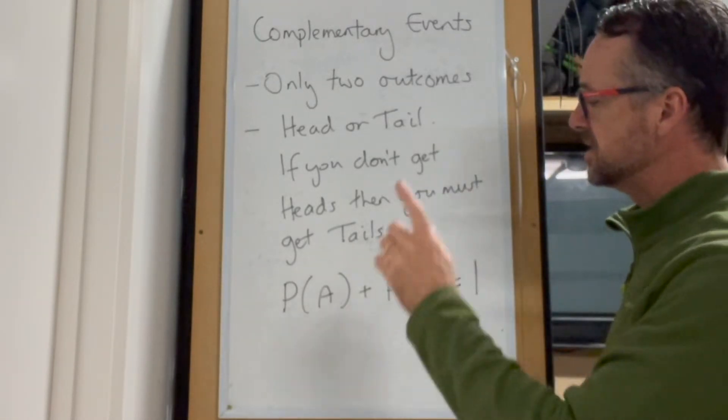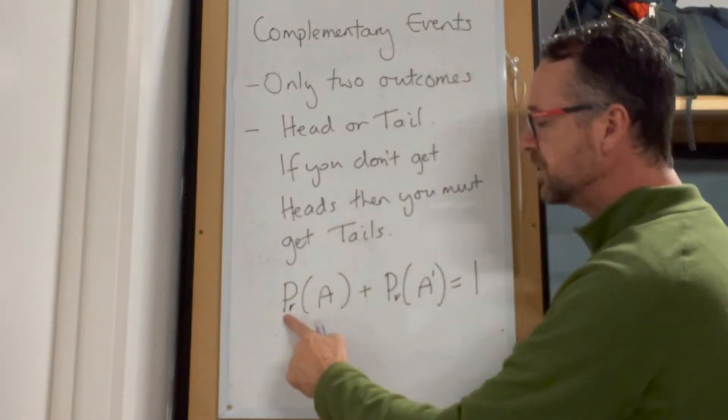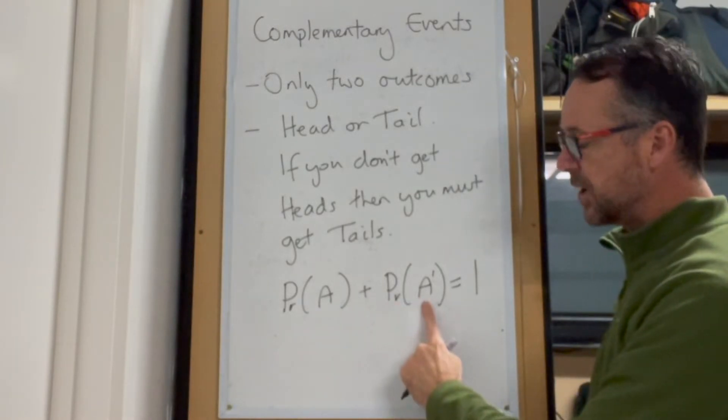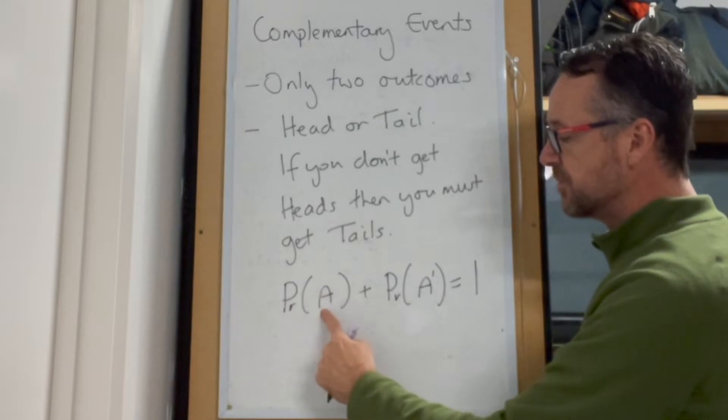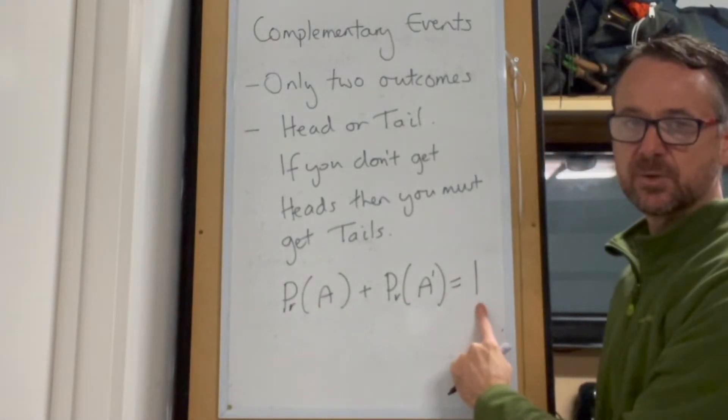What we represent this by is the probability—I should have a P there—and the probability of A is of the event that you're after, and then the opposing part of that is A with a little dash on it. And what we know is that the probability of those two things adds up to equal one.